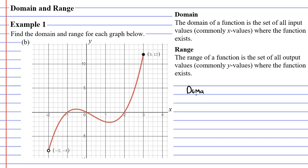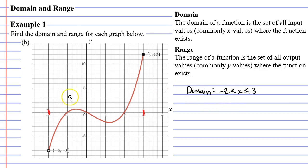Now let's move on to question b, starting with the domain. We look at the horizontal axis and see where the function exists — it exists between negative 2 and 3. It never goes beyond negative 2 to the left or beyond 3 to the right. So the domain is the set of x values between negative 2 and 3. However, we need to be careful — there's a hollow point at negative 2, which means the function doesn't exist at negative 2 but exists at values approaching it. So we use a strict less-than sign, not less-than-or-equal-to.